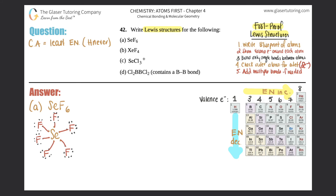Now check your outer atoms for the octet - octet means eight electrons. There are some exceptions: hydrogen only wants a max of two electrons when bound, and boron when neutral only wants a max of six. But fluorine wants the octet: two, four, six, eight - and going around all of them, each fluorine has two, four, six, eight. All outer elements are good.